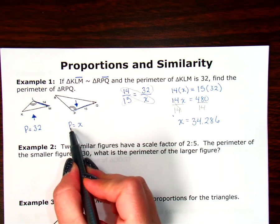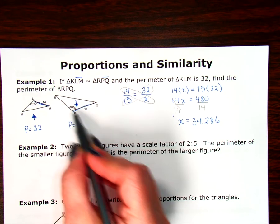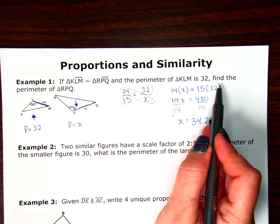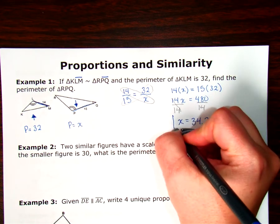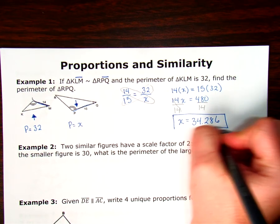That is my value of X, which is the perimeter of RPQ, which is what I was trying to find. So that is my final answer for example 1.